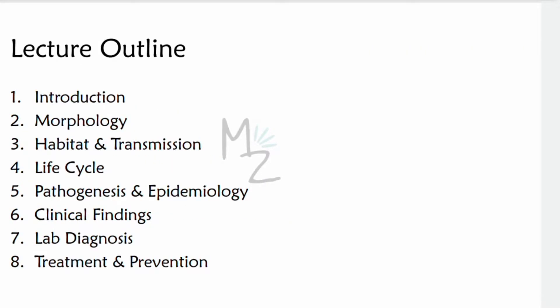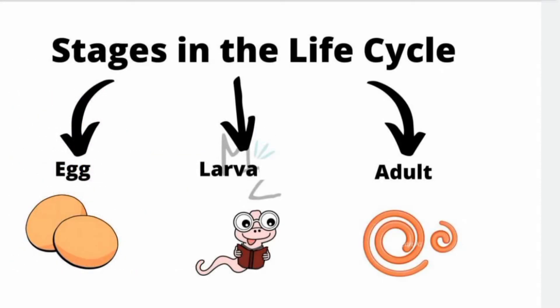Lecture outline: we'll discuss morphology, habitat and transmission, life cycle, pathogenesis and epidemiology, clinical findings, lab diagnosis, treatment, and prevention. Before talking about morphology, there are three developmental stages in the life cycle of every nematode: egg, larva, and adult.